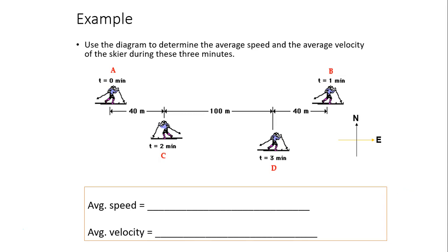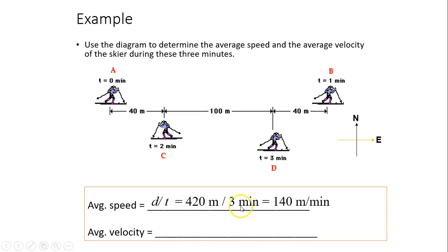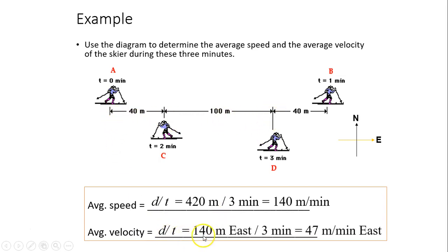Using the same skier diagram (A to B to C to D over three minutes): average speed is total distance divided by total time = 420 meters / 3 minutes = 140 meters per minute. Average velocity uses displacement instead: 140 meters east divided by 3 minutes ≈ 47 meters per minute east.